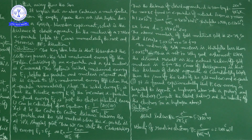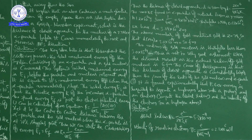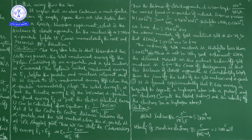Third problem: It is found experimentally that 13.6 electron volts of energy is required to separate a hydrogen atom into a proton and an electron. Compute the orbital radius and the velocity of the electron in a hydrogen atom — two things to calculate.